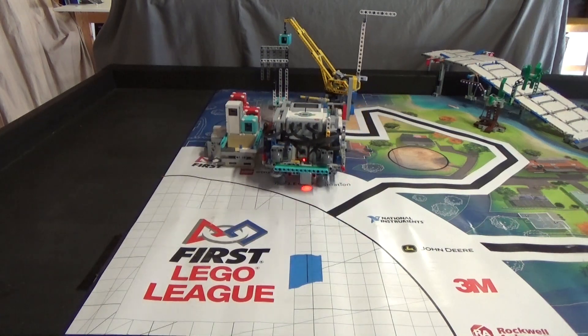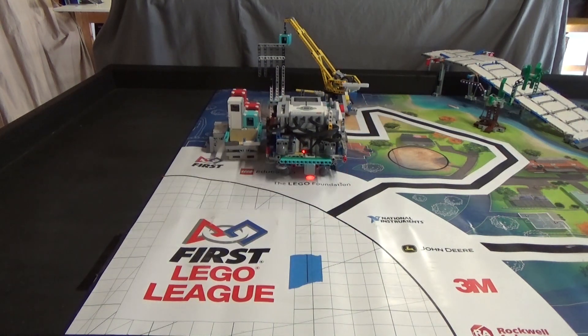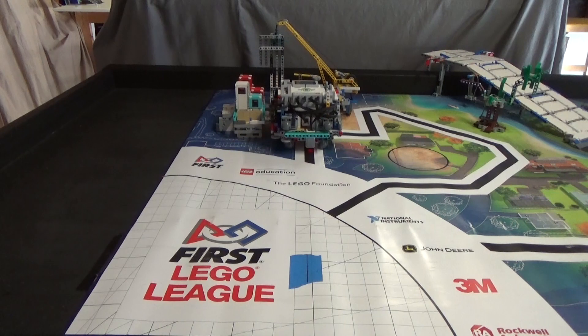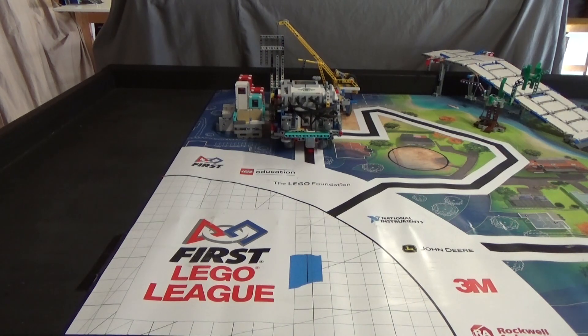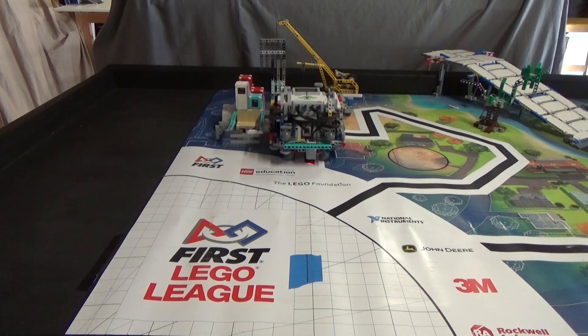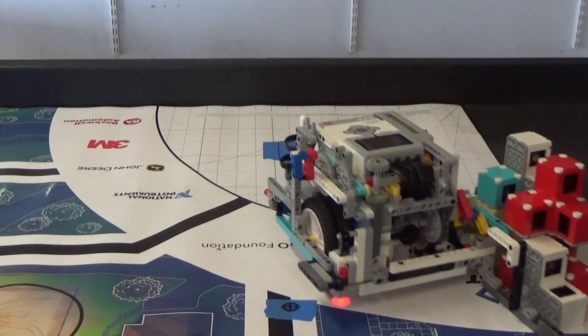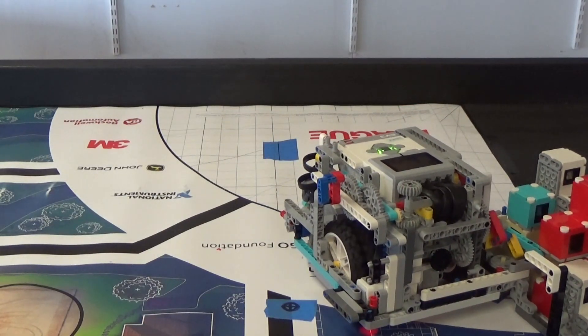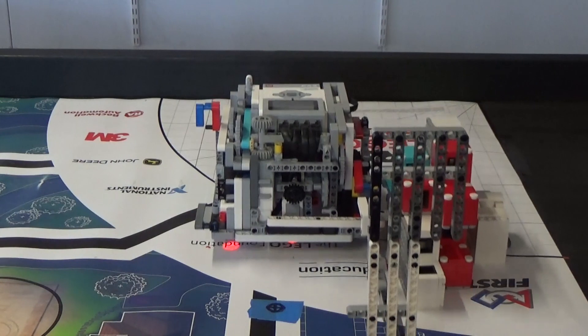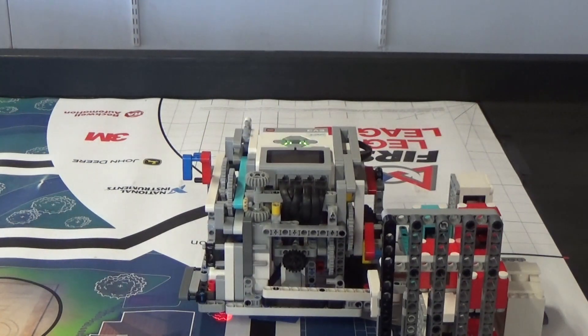In the First LEGO League City Shaper robot game, my team's robot combines pushing building units alongside it into a black circle with driving straight to perform the crane mission. When we tried to drive straight with just a move steering block at zero steering angle, the blocks would cause the robot to veer to the left. Then we tried using PID Control with a gyro sensor to drive straight.